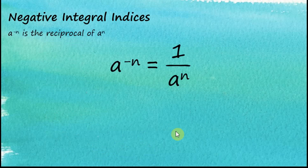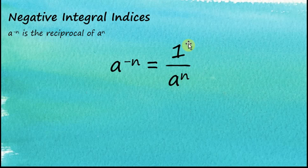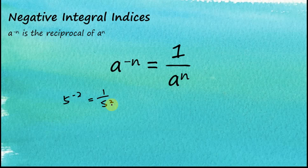We can conclude that a to the power of negative n is the reciprocal of a to the power of n. A to the power of negative n is equal to 1 divided by a to the n, and this is called the reciprocal of a to the n. For example, 5 to the power of negative 2 is equal to 1 over 5 squared.